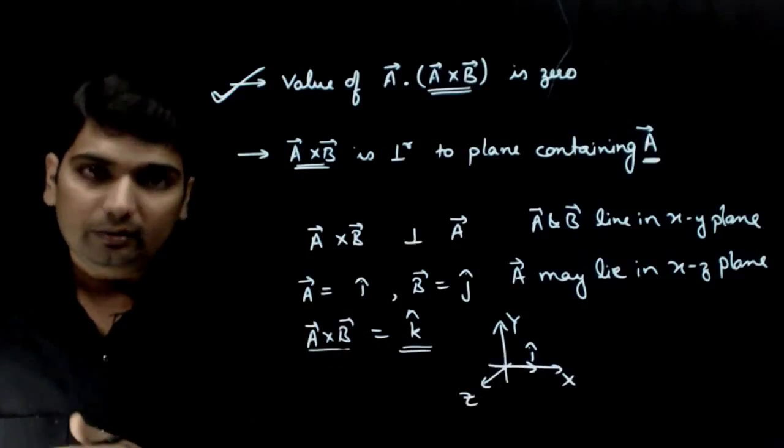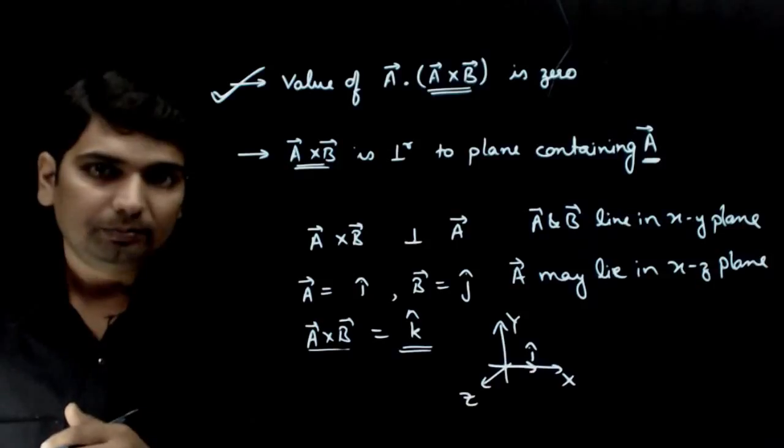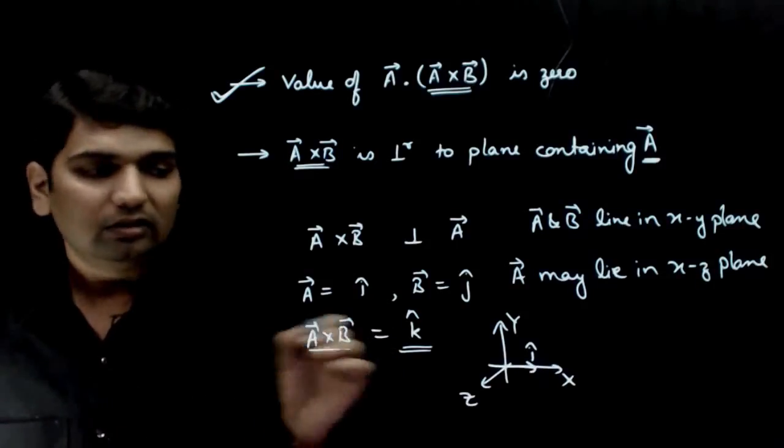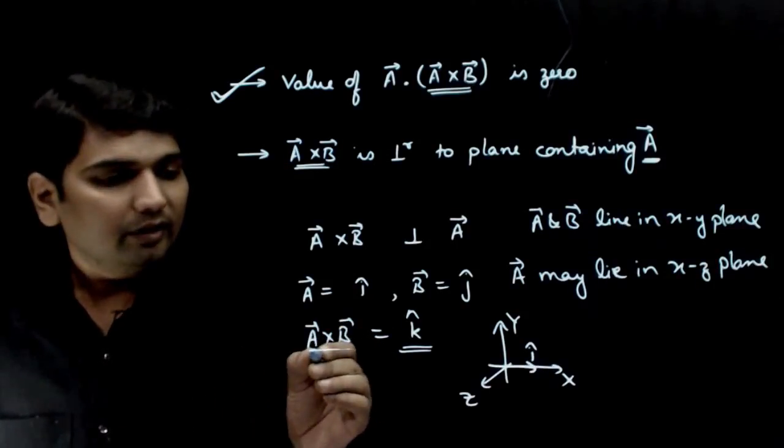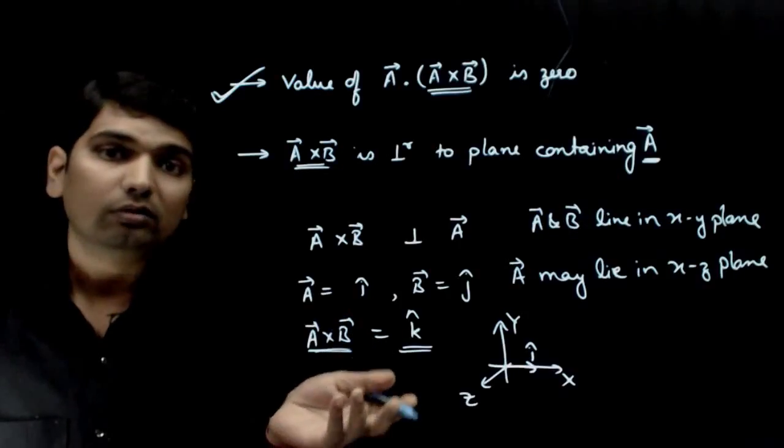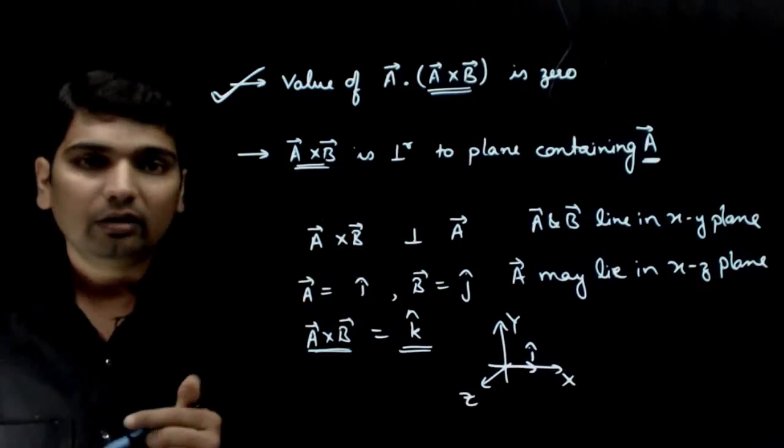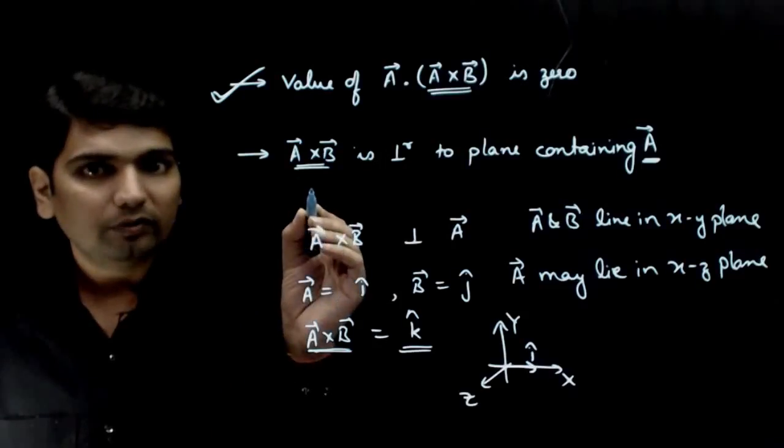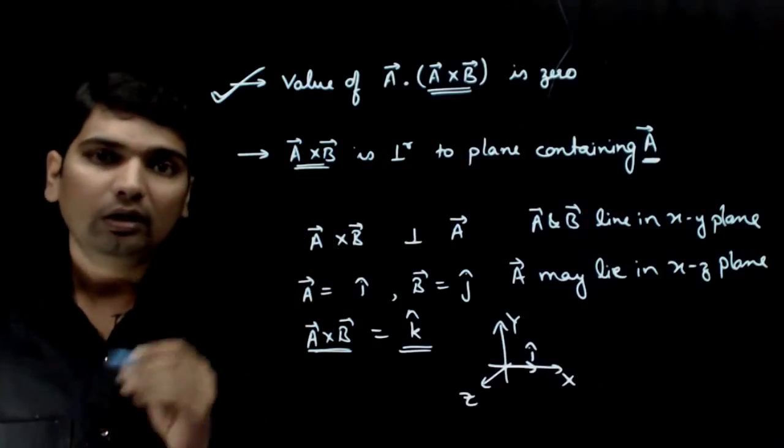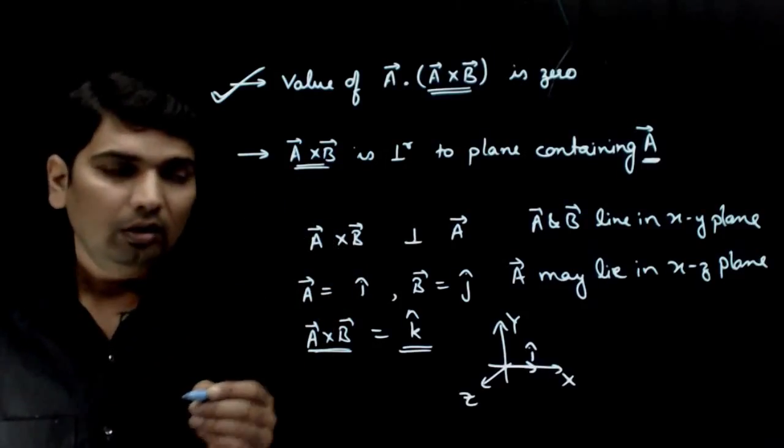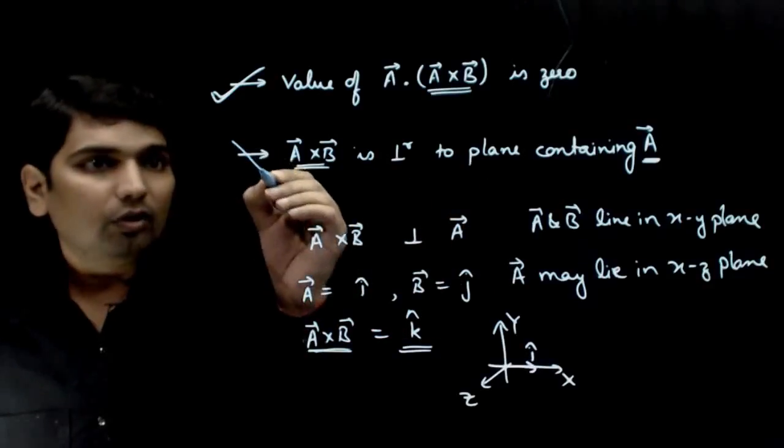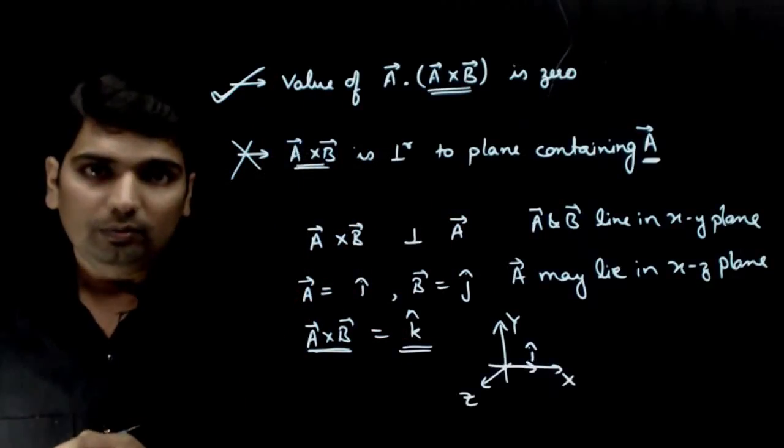A cross B lies within the XZ plane itself. Therefore, this statement that A vector cross B vector will always be perpendicular to any plane containing A vector is wrong. A vector cross B vector will be perpendicular to the plane containing both A and B. Therefore, this statement is false, and the first statement is true.